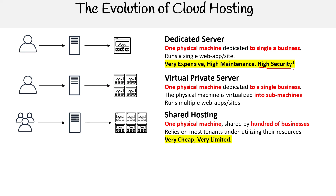Then came along cloud hosting. Instead of having a single machine, you had multiple machines with virtualization. Now you can have a lot more customers on the same infrastructure, and it's highly distributed, so you don't have to worry about one customer overusing a single machine. You basically get the best of all worlds — it's flexible, scalable, really secure, cost effective, and highly configurable. That's basically the reason why cloud hosting and cloud computing is so popular today.